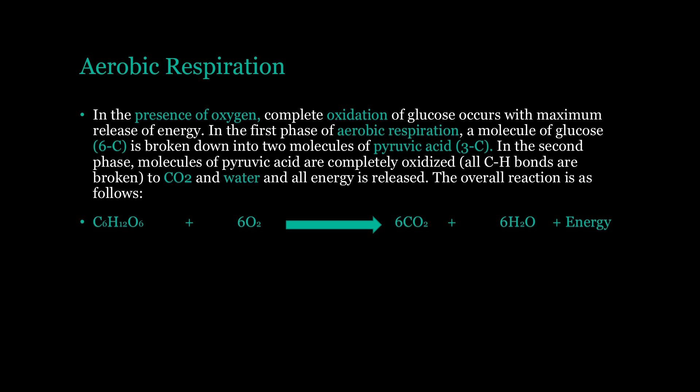In summary, aerobic respiration has three phases. In the first phase, glucose is broken down into two molecules of pyruvic acid. In the second phase, the pyruvic acids are completely oxidized and all CH bonds present in them are broken down. In the third phase, all the energy is released at the end of aerobic respiration. This is the first type of respiration.